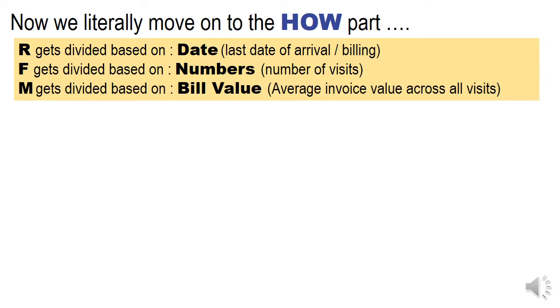Now we move on to the how part. R gets divided based on date — recency is a function of the last date on which there was a billing. F gets divided based on numbers — frequency is driven by number of visits. M gets divided by bill value — monetary is driven by the invoice value.